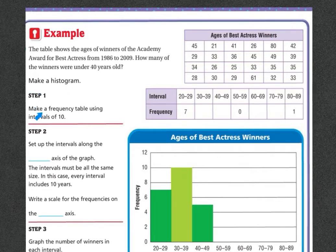Step 1 is to make a frequency table using intervals of 10. So 20 through 29 years, 30 through 39, 40 through 49, and so on. So they've already found all of the frequencies that were 20 through 29. So now let's circle the ones that are from 30 through 39. So we've got 1, 2, 3, 4, 5, 6, 7, 8, 9, 10. There were 10.